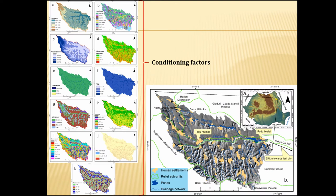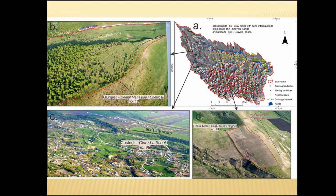Here is the study area. The conditioning factors used to produce the final susceptibility maps include aspect, land use, precipitation, slope, lithology, and topographic wetness index. We divided the landslide data into training landslides to build the model and testing landslides to test the predictability strength of the model.